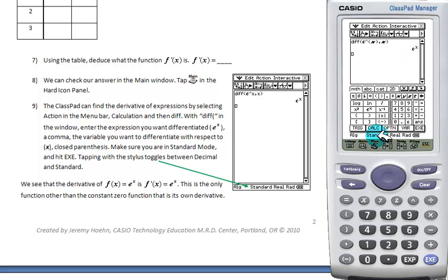Now this requires that we're in standard form. With your stylus, you can toggle between decimal and standard. If we're in decimal form when we do this, we'll get a decimal approximation for e.